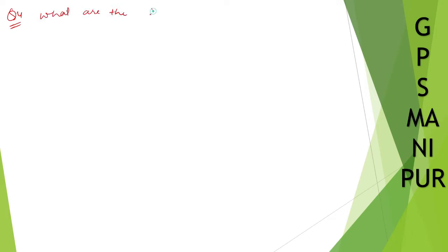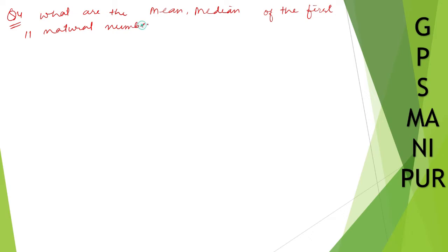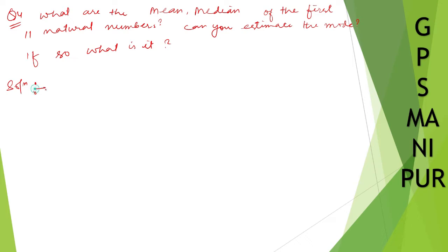We are doing question number four, exercise 14.1. The question is: what are the mean, median, and can you estimate the mode of the first 11 natural numbers? If so, find it. The question is simple.